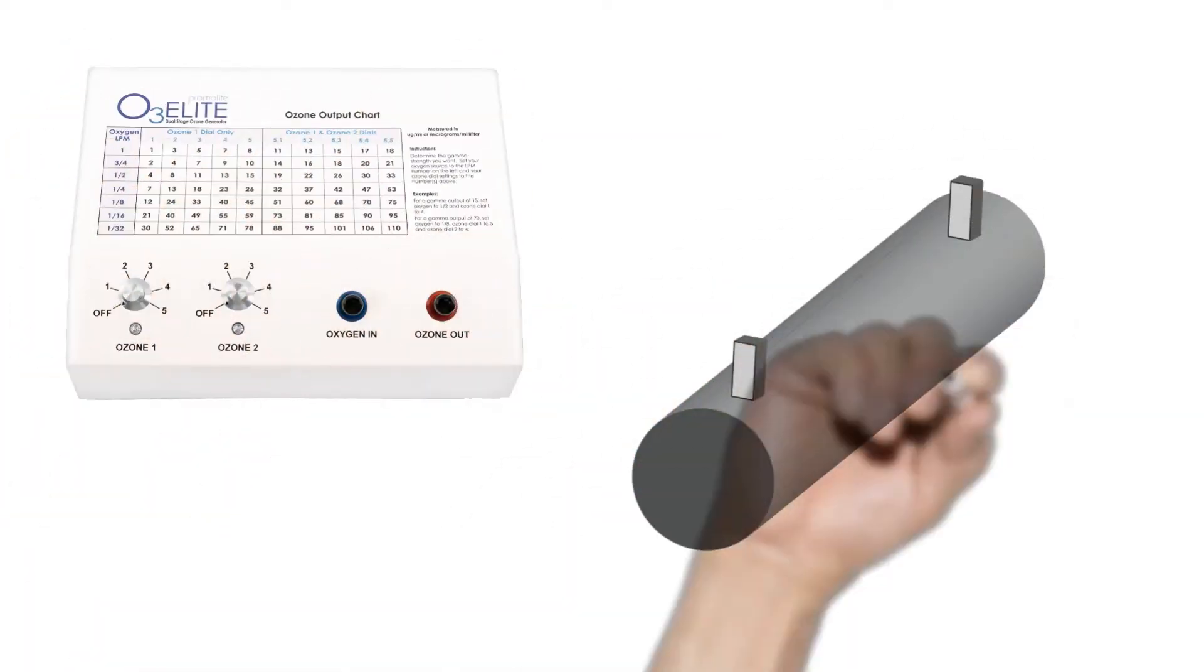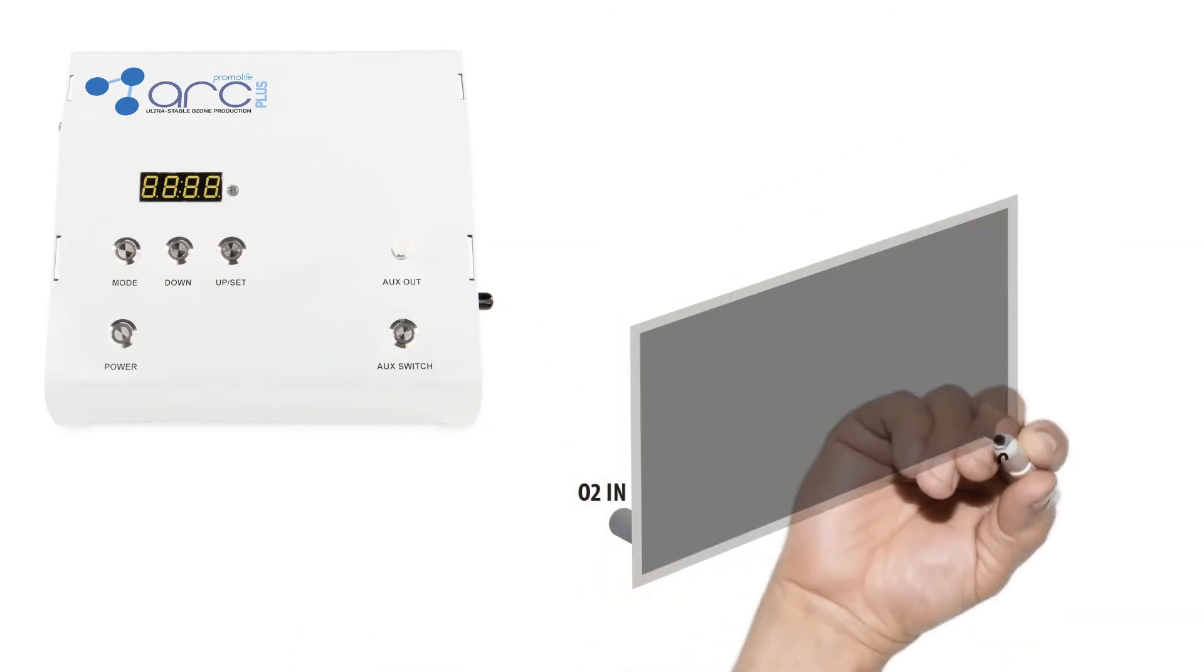In the O3 Elite, the cell is a long cylindrical tube with a narrow ceramic electrode extending down the center. In the O3 Arc, the cell is similar but has been unrolled to maximize the ozone efficiency and cooling properties.